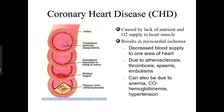Ischemia is a constriction of blood flow due to atherosclerosis — the formation of plaques. Ischemia can cause angina pectoris or chest pain, which can escalate to a complete blockage. A complete blockage of blood flow to the heart results in myocardial infarction. Ischemia can also be caused by thrombosis, spasms, embolisms, and anemia.